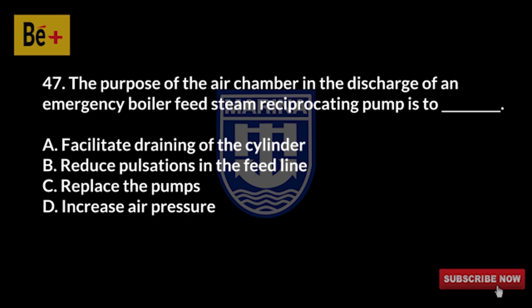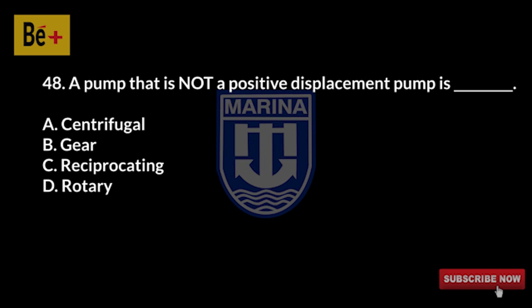The purpose of the air chamber in the discharge of an emergency boiler feed steam reciprocating pump is to: A) facilitate draining of the cylinder, B) reduce pulsations in the feed line, C) replace the pumps, D) increase air pressure. The answer is B, reduce pulsations in the feed line.